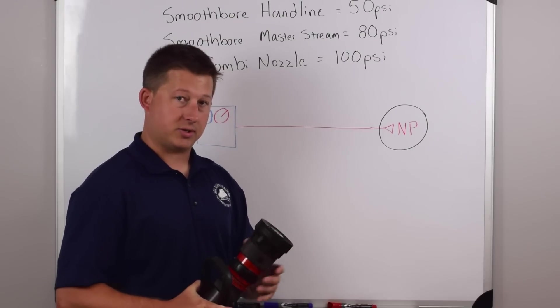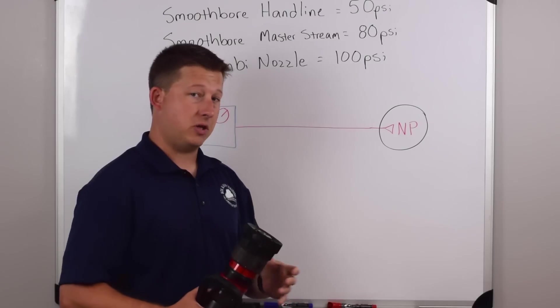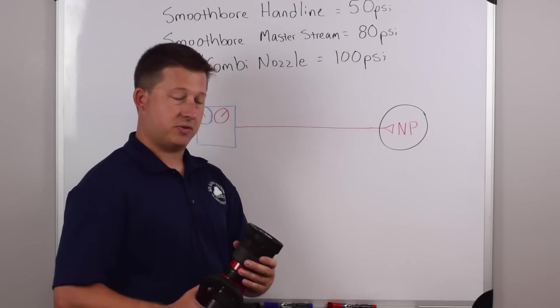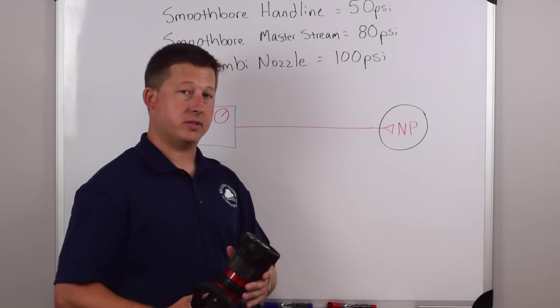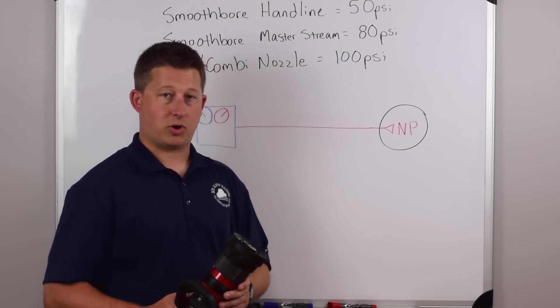You can purchase a nozzle like this one in a 75 PSI version, or you can purchase it in a 50 PSI version. So just because it's a fog or combination doesn't mean that it operates at 100 PSI. You have to check your own nozzle to see what the nozzle pressure operates at.